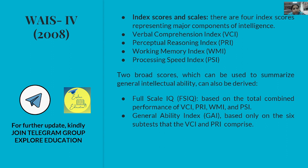The reason for separating GAI from FSIQ is relevant for older adults. As we age, working memory and processing speed tend to decline. So when comparing younger and older adults, if we want a measure less affected by age-related decline, we use the GAI, which excludes processing speed and working memory.